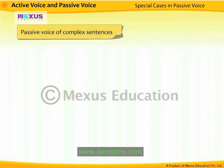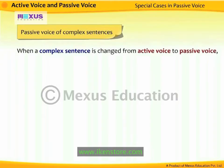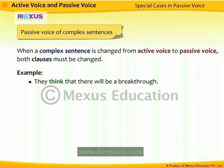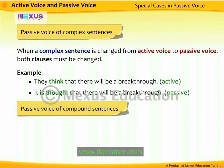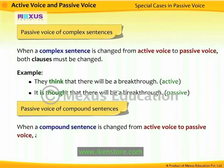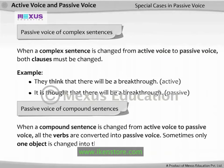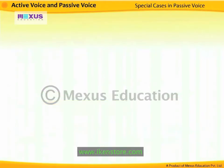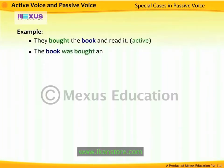Passive voice of complex sentences: when a complex sentence is changed from active voice to passive voice, both clauses must be changed. For example, 'They think that there will be a breakthrough' becomes 'It is thought that there will be a breakthrough.' Passive voice of compound sentences: when a compound sentence is changed from active voice to passive voice, all the verbs are converted into passive voice. Sometimes only one object is changed into the subject in the passive voice and the rest are left as they are if not required. For example, 'They bought the book and read it' becomes 'The book was bought and read by them.'